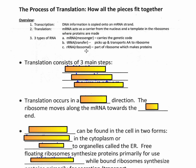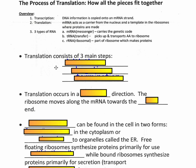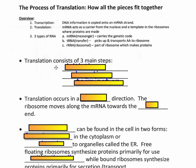rRNA is more just a structural component of the ribosome. The ribosome is actually made of some proteins itself and contains some rRNA. There are three steps to translation — and they're kind of easy to predict, like beginning, middle, and end.